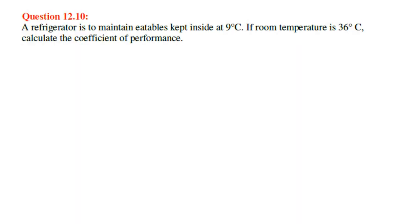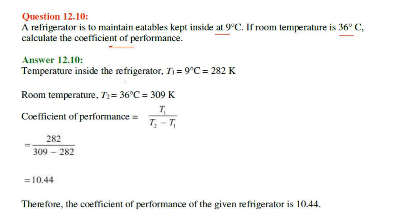A refrigerator is to maintain vegetables kept inside at 9 degree centigrade. If the room temperature is 36 degree centigrade, we have to calculate the coefficient of performance. The temperature inside the refrigerator is 9 degrees; converting to Kelvin by adding 273. The room temperature is 36 degrees; again adding 273. The coefficient of performance is T1 by (T2 minus T1). Putting in the values, we get 10.44. So the coefficient of performance of this refrigerator is 10.44.